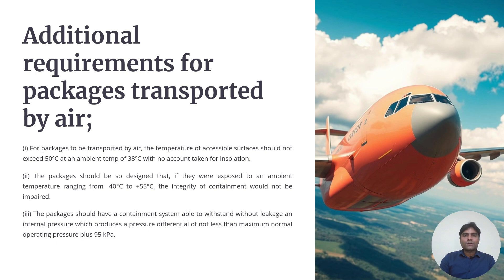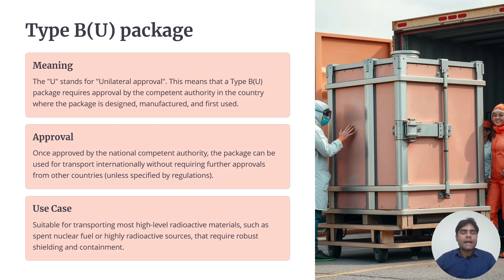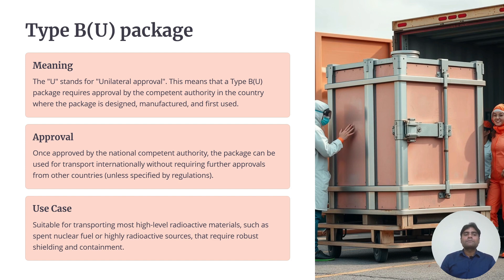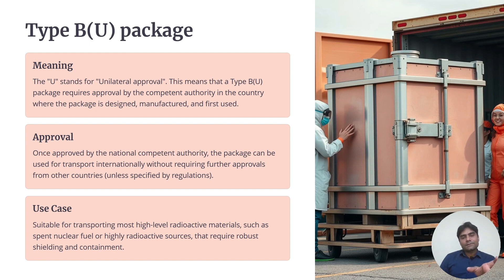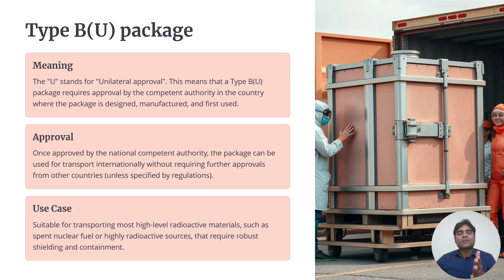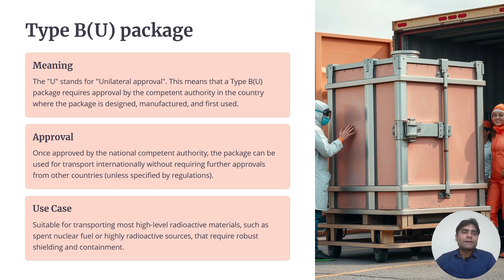Now coming to Type B packages, which have two categories: BU and BM. BU stands for unilateral approval — this means the Type BU package requires approval only by the competent authority in the country where the package is designed, manufactured, and first used. If approval is required from only one country involved in the transportation, it is called a Type BU package. If approvals are required from all countries through which the material passes during transport, it is called a Type BM package.